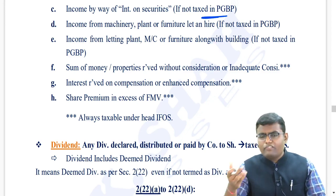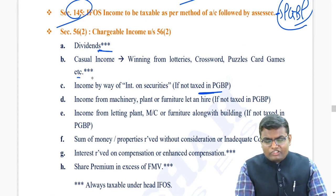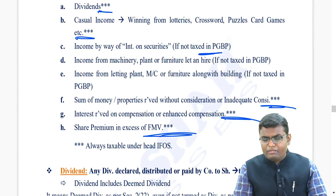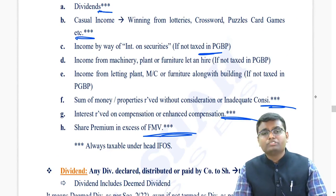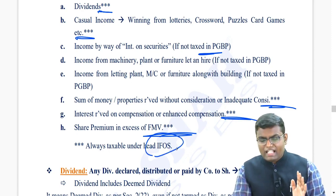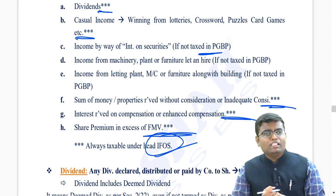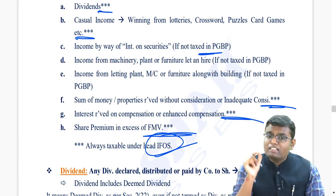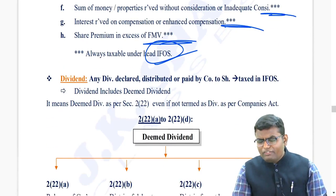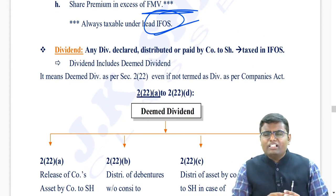Wherever I have put asterisk marks - dividend income and casual income - even though they are related to business, they will always be taxable under IFOS. So remember: dividend for a share broker is IFOS income; casual income, even if it is the main business, is still IFOS income. It is always IFOS income.